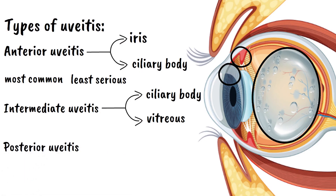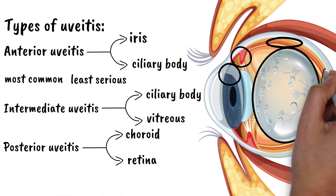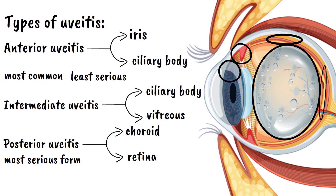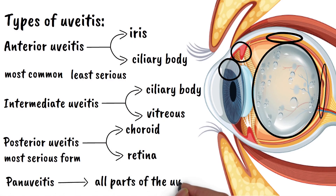Posterior uveitis affects the back part of the eye, including the choroid and often extending to the retina — the most serious form because it directly threatens the retina, which is like the film in a camera where images are captured. Then there's panuveitis, which affects all parts of the uvea simultaneously, like having inflammation throughout your entire house from the front door to the back rooms, making it the most severe and challenging form to treat.